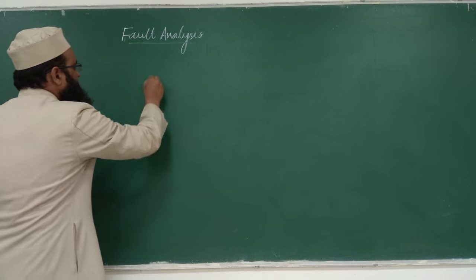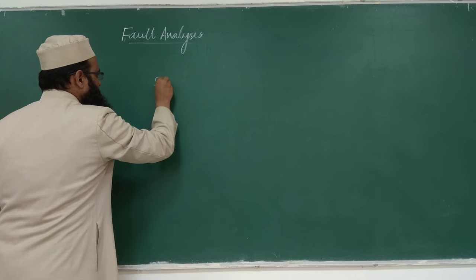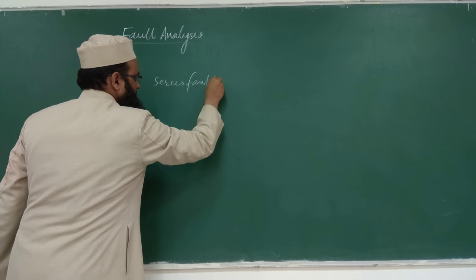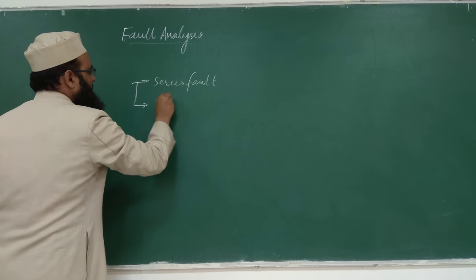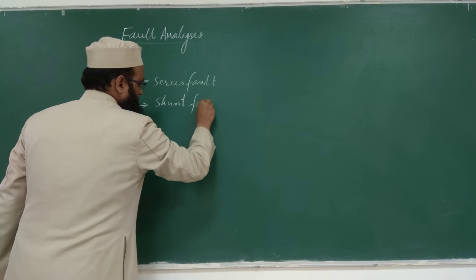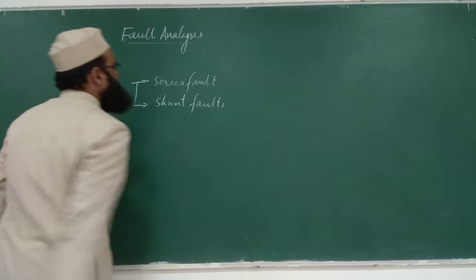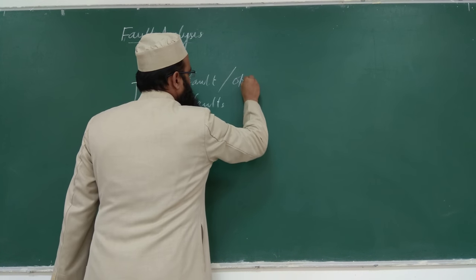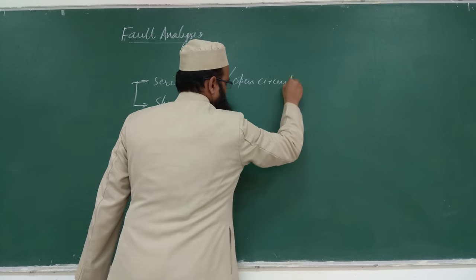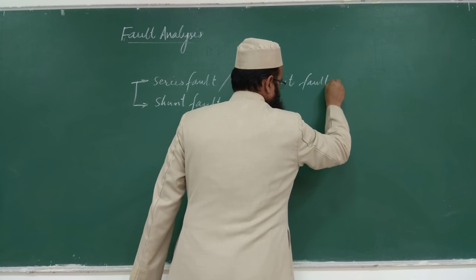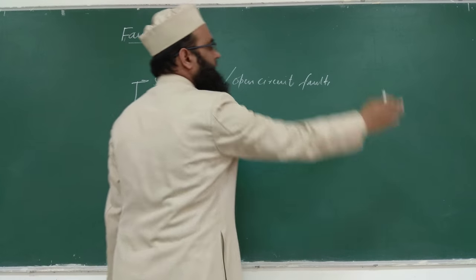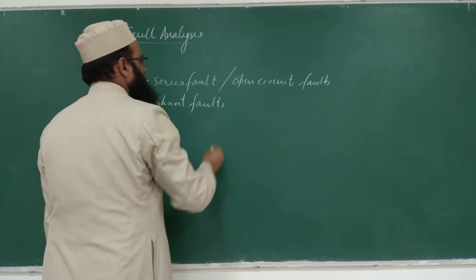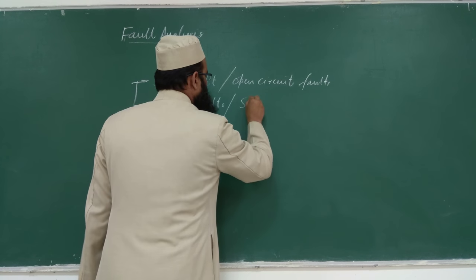A fault may be either a series fault or a shunt fault. Series faults are also known as open circuit faults, such as one conductor open, two conductors open, or all three conductors open. Shunt faults are also known as short circuit faults.